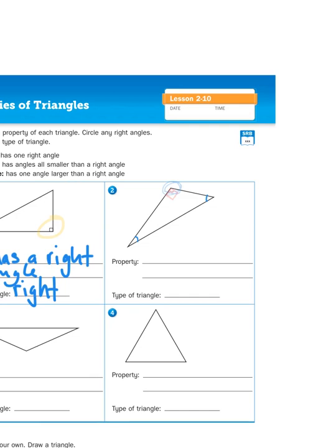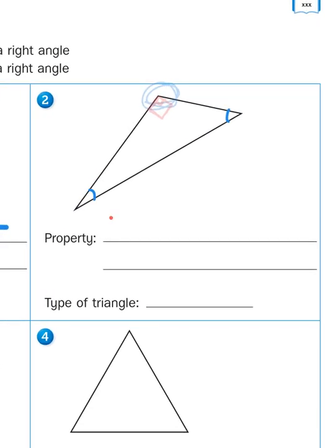Okay, so that means that this is an obtuse triangle. So what is the property? Well, the property is, I'm looking at the angles, and there is an obtuse angle.